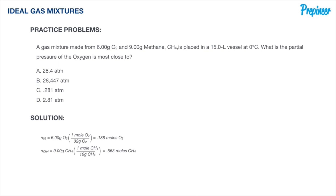This example says a gas mixture made from 6 grams of oxygen and 9 grams of methane is placed into a 15-liter vessel at zero degrees Celsius. What is the partial pressure of oxygen? We have four answer options, and because each gas behaves independently, we can calculate the pressure each would exert if the other were not present.